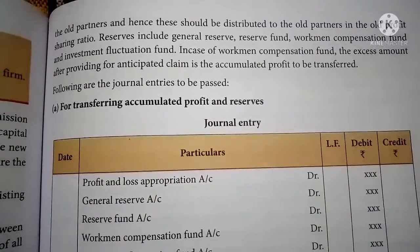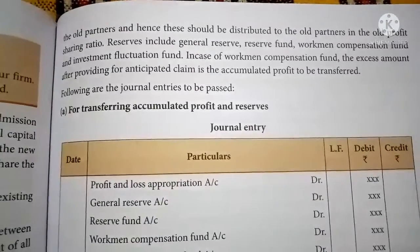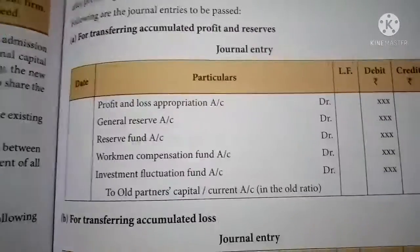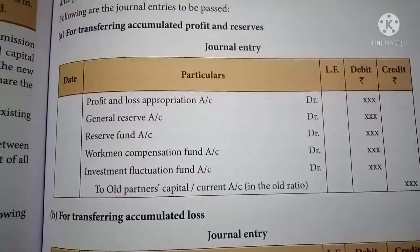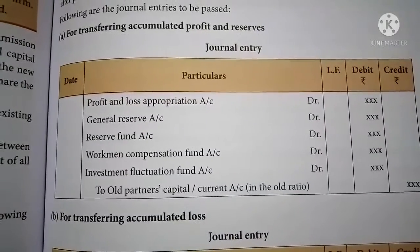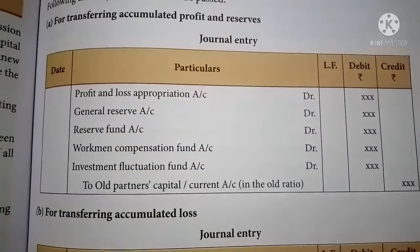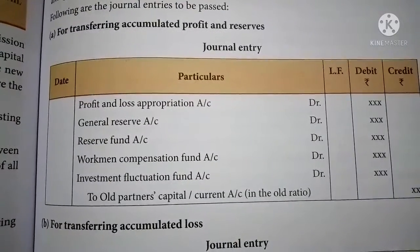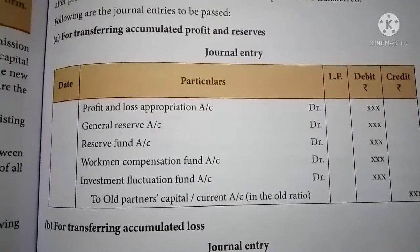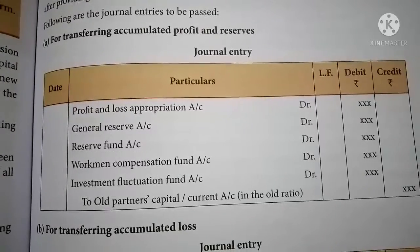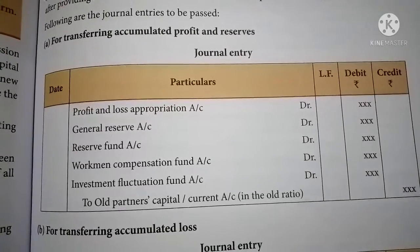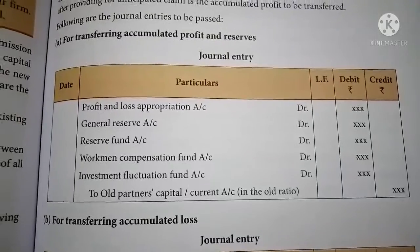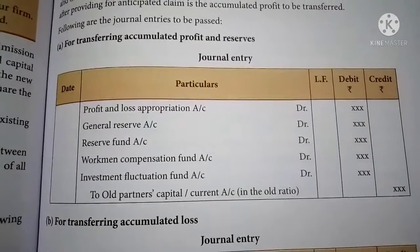In case of workman compensation fund, the excess amount after providing for anticipated claims is the accumulated profit to be transferred. The general entry to be passed for transferring accumulated profit, reserve, reserve fund, workman compensation fund, and investment fluctuation fund to the old partners' capital accounts in the old sharing ratio is: profit and loss appropriation account, accumulated profit account, general reserve account, reserve fund account, workman compensation fund account, and investment fluctuation fund account — to old partners' capital account, or old partners' current account if capital is maintained under the fixed method. This entry is passed for transferring all the gains to the partners.